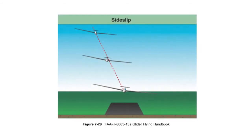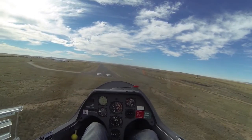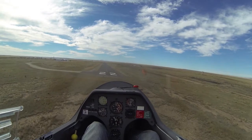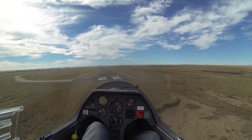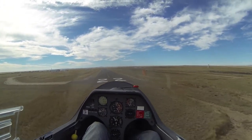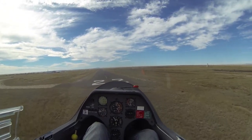A side slip is used when compensating for a crosswind. In the side slip, the nose of the glider is pointed approximately straight to the runway, with the upwind wing lowered. The resultant track of the glider and the longitudinal axis remain approximately aligned with the runway centerline.